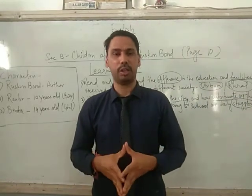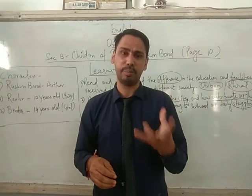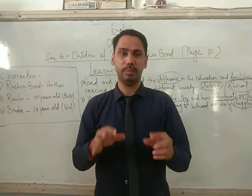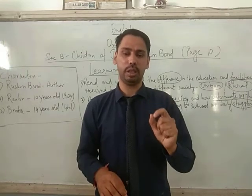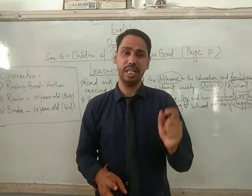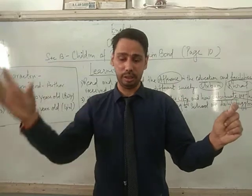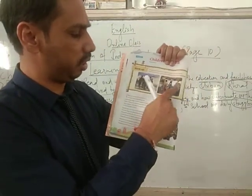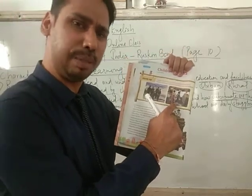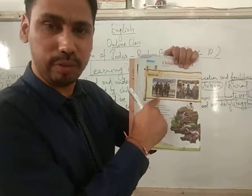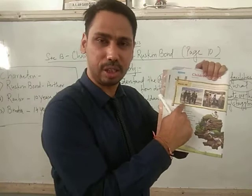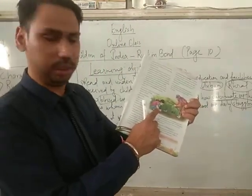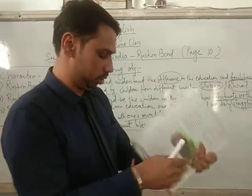This is the introduction part of what the author wants to say. We will be continuing with the story and I will give you the summary in the next class. Today I'm just giving you the introduction. Please watch this video very carefully and understand the difference between children staying in urban areas and those staying in rural areas. Here you can see another picture — children with transport facilities going to school by bus, compared to those walking without any facilities. And here is a girl helping her mother in the field, and yet she still goes to school.